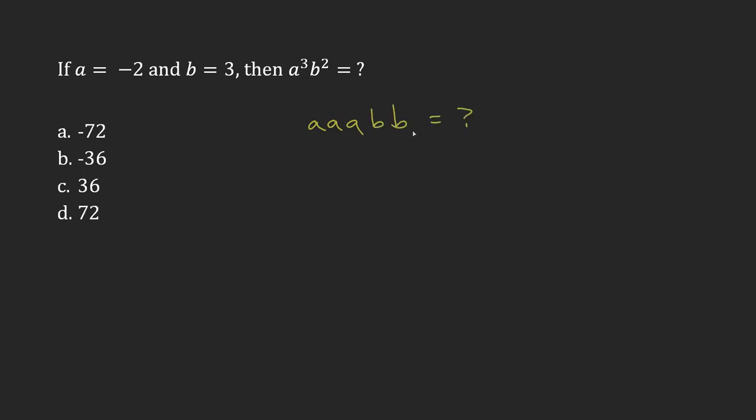So this is what I'm trying to figure out. Now I can substitute in my value for a, which is negative 2, my value for b, which is 3, and then work this out.